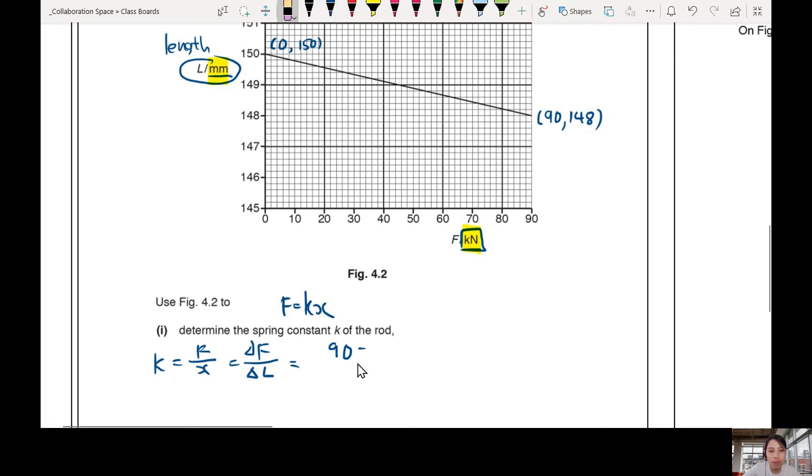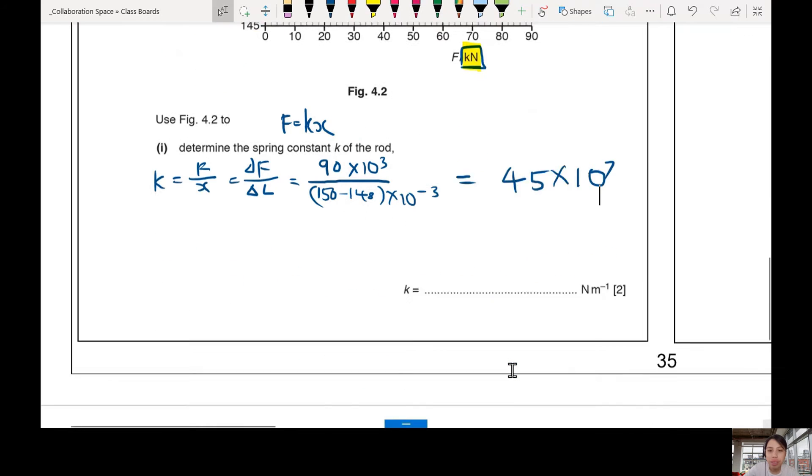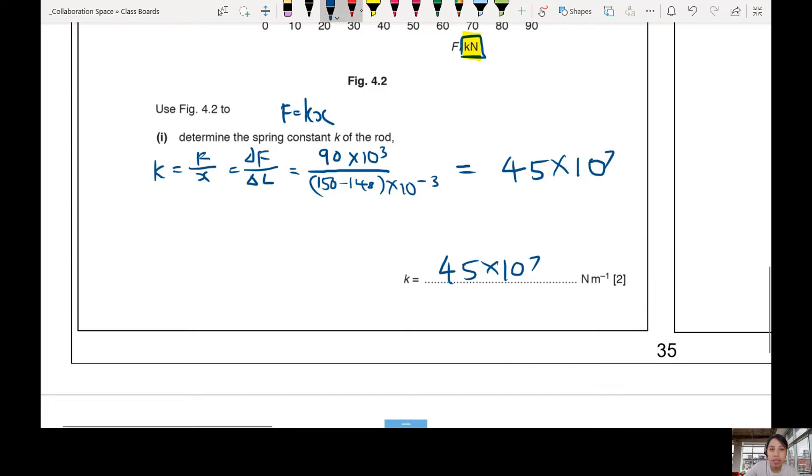Change in force, if I use the first and last point, you can use any point, as long as I choose the last point for convenience. This would be 90 times 10 to the 3 kilo. 90 minus 0 is just 90. Then the change in length. We go from 150, change down to 148. Times 10 negative 3. Careful of the prefix, you need to include those as well. So this one will give you a very big number, 45 times 10 to the 7. Big number. If you manage to get that and write that in the answer line, that is one final mark. Another mark comes - they see you knowing to find force over extension or force over change in length.